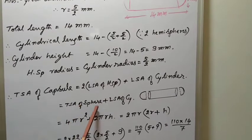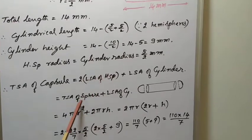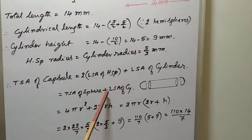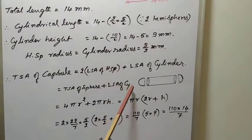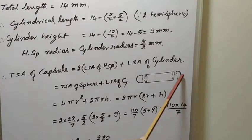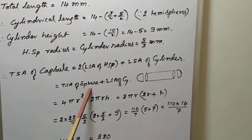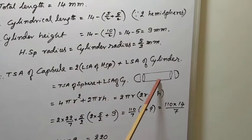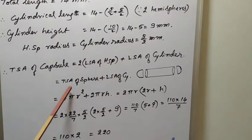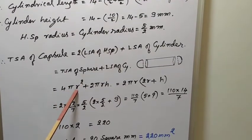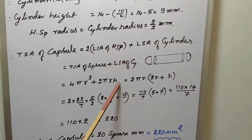Therefore, TSA of sphere, because 2 parts form a sphere, TSA of sphere plus LSA, lateral surface area of cylinder. This cylinder, one hemisphere, another hemisphere. If we join these two, that forms a sphere. And this cylindrical part, we are not considering these two parts. Therefore, lateral surface area. Now, TSA of sphere formula is 4 pi R square plus LSA of cylinder is 2 pi R into H.